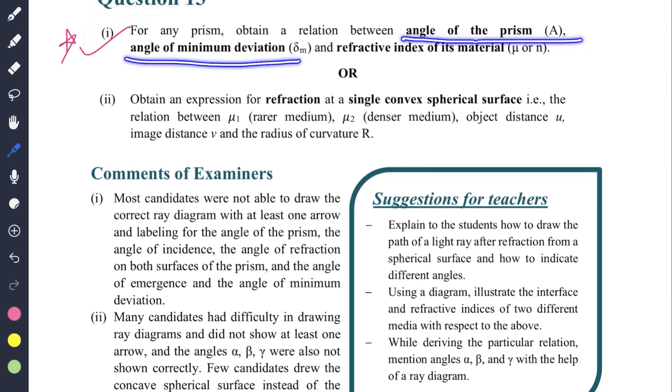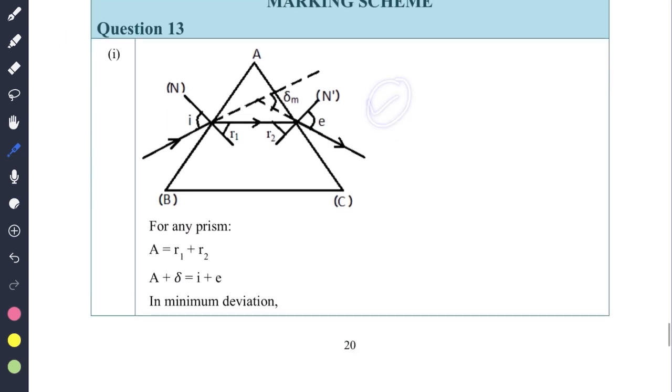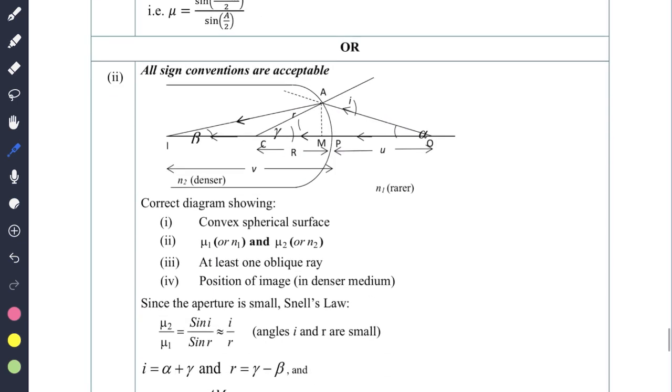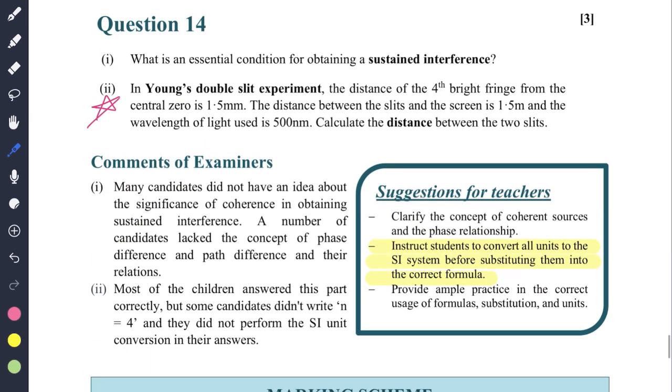Then question number thirteen: this is again a derivation. They have given angle of prism as A and minimum deviation as this, so you'll have to write that only while attempting the question. This is the derivation - the diagram and the labeling should be done. I told you to instruct students to convert all units to the SI system before substituting them into the correct formula.